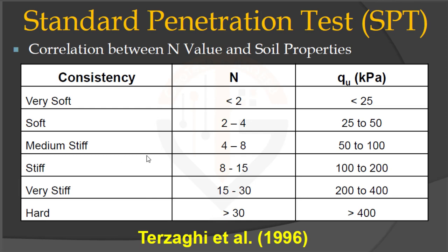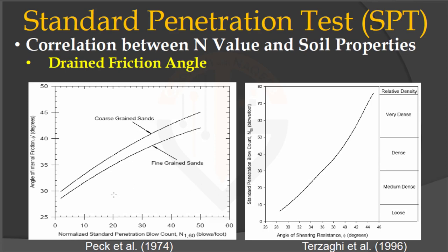The consistency of cohesive soil can also be described with respect to SPT-N value and unconfined compressive strength. If the SPT-N value is less than 2, the soil consistency is very soft with unconfined compressive strength less than 25 kPa. For soft soil, N is 2 to 4 with qu between 25 to 50 kPa. For medium stiff soils, N is 4 to 8 with qu between 50 to 100 kPa, and so on.